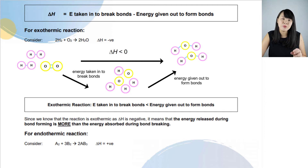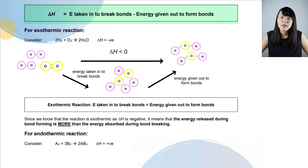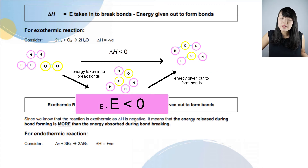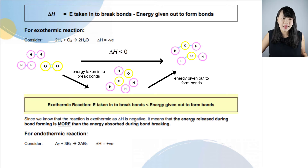The overall change in energy, delta H, is less than zero — it is negative. Delta H equals the energy taken in to break bonds minus the energy given out to form bonds. If delta H is negative, the energy taken in to break bonds must be smaller than the energy given out to form bonds — only then will a small energy minus a big energy give a value less than zero. So in general, in an exothermic reaction, the energy taken in to break bonds is less than the energy given out to form bonds.